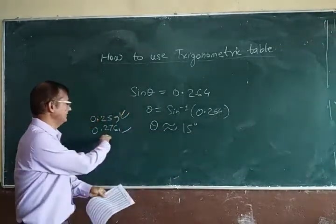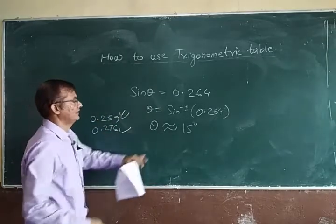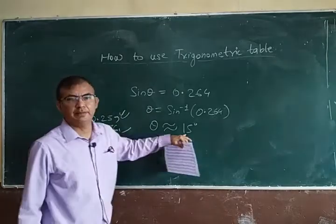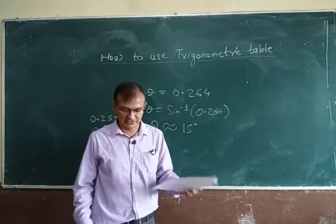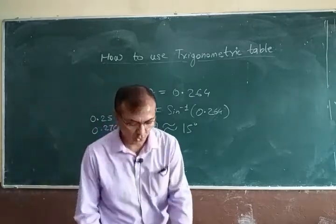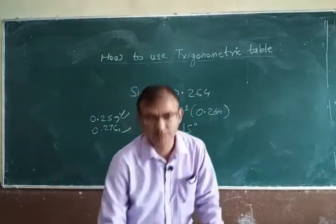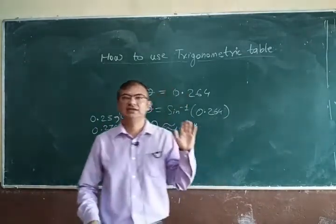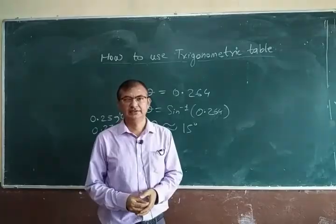The next angle is 16 degrees, and since 0.264 is much closer to 0.259, it is approximately equal to 15 degrees. I hope this will clarify your doubts. Thank you.